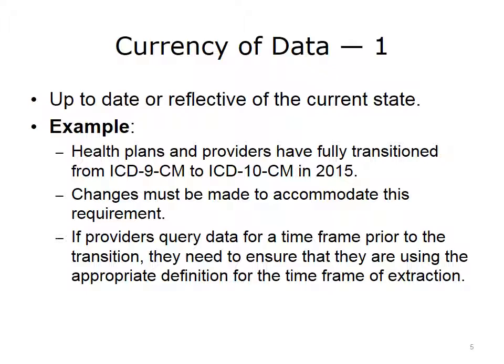System currency is judged based on how well it reflects the current world. Currency means the data are up-to-date and the information is correct despite time-related changes. The data are up-to-date if they are current for a particular point in time and outdated if the situation changes and the data are no longer correct. The term decay can be used to describe the temporal aspect of data currency quality. Data values can be accurate when entered, but become inaccurate over time. For example, a blood glucose drawn in the past is current only for the date and time the sample was taken, and it should not be assumed that the value is current for any other point in time.